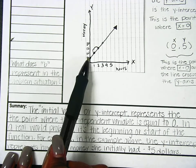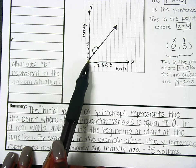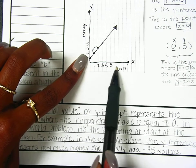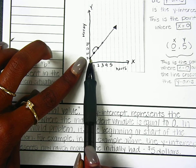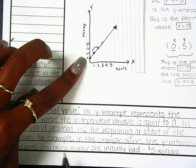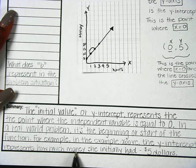For example, in our example right here, our y-intercept is at (0, 5), meaning that before any hours have passed, I have five dollars. So in the example above, the y-intercept represents how much money I initially had, which was five dollars.